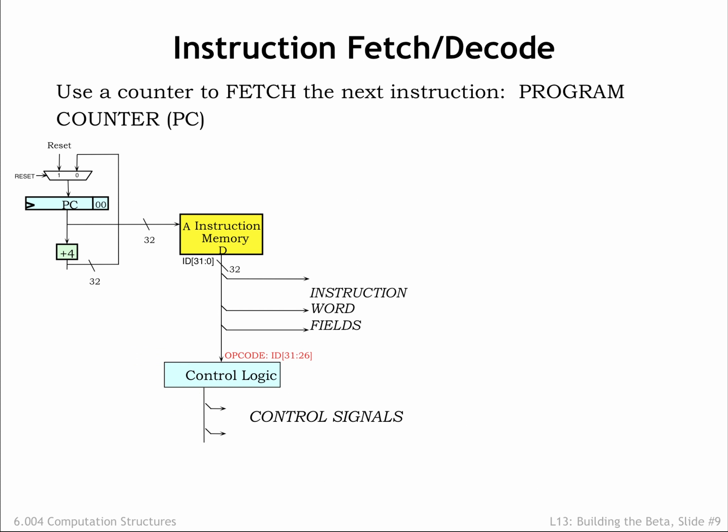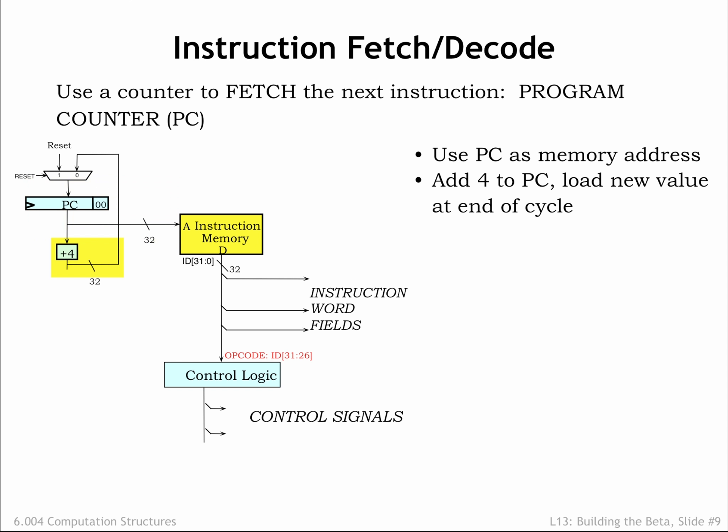Here's a sketch showing the hardware needed for the fetch and decode steps. The current value of the PC register is routed to main memory as the address of the instruction to be fetched. For ALU instructions, the address of the next instruction is simply the address of the current instruction plus 4. There's an adder dedicated to performing the PC+4 computation, and that value is routed back to be used as the next value of the PC.